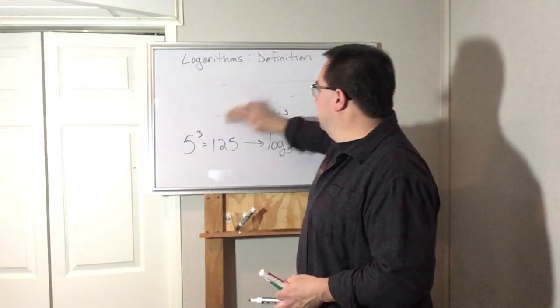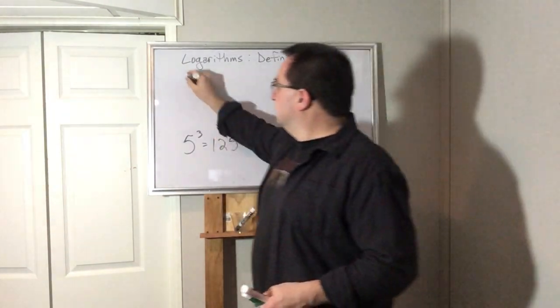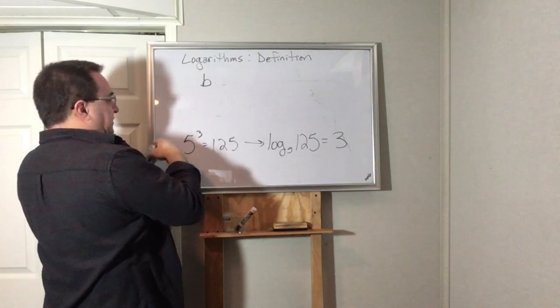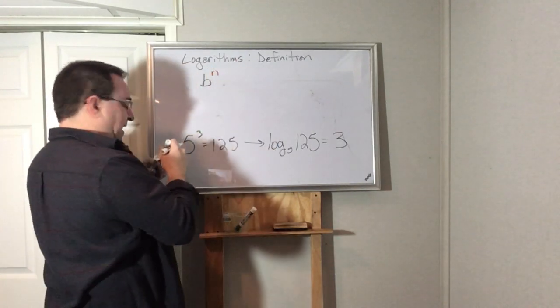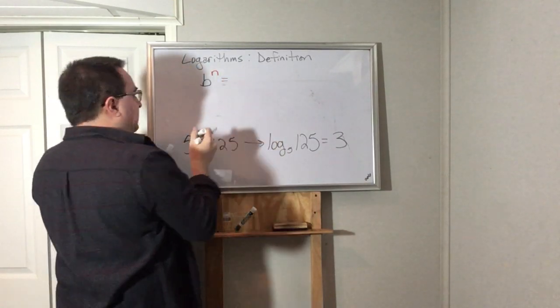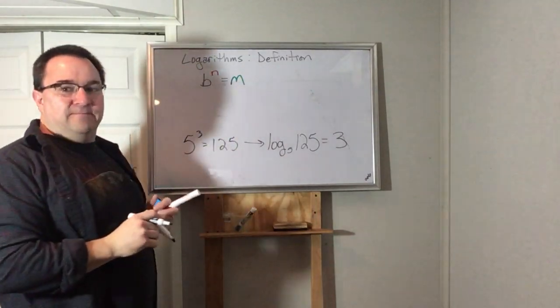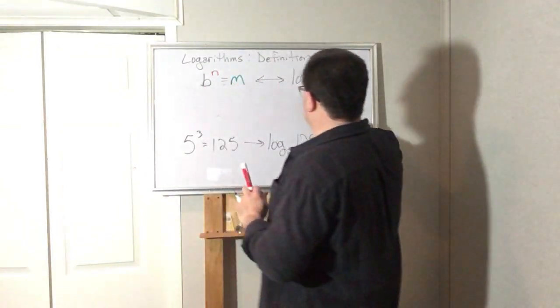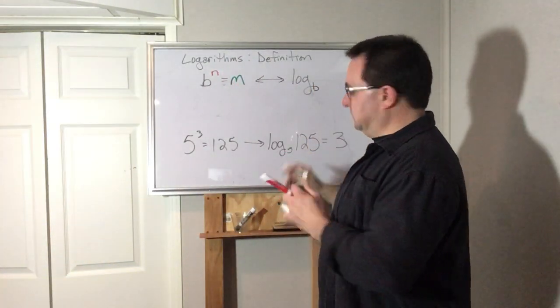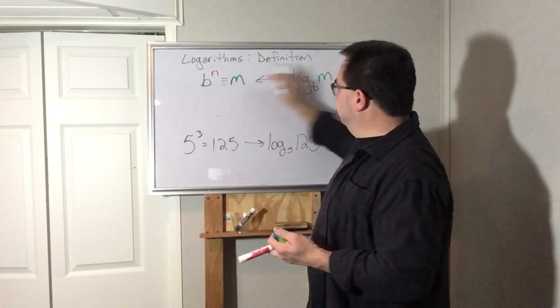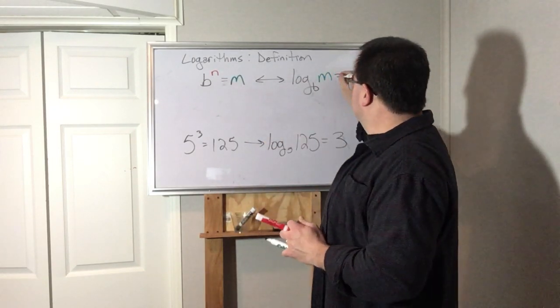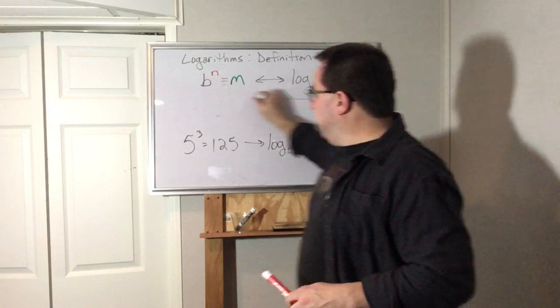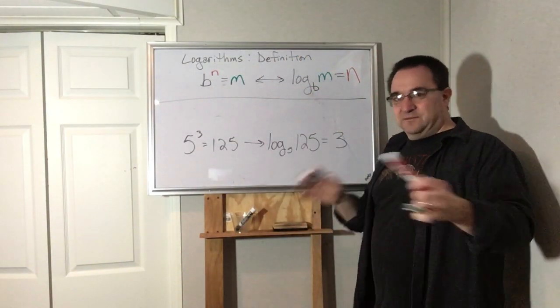Well that leads to this formula if I want to learn it as a formula. Let's write the exponential first. A number, let's call it the base, to a power, let's call it n, would equal some answer, let's call it m. That can be rewritten - it goes both ways - as log base b of m equals, and the power goes over by itself. It's a pattern thing. You just need to get used to where the pieces go.